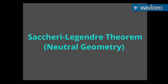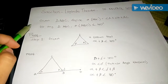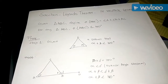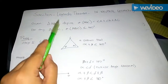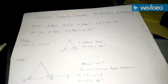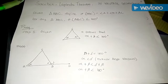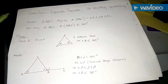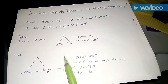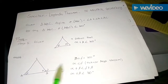Hi everyone, this is Casey from String Mathematics. In this lesson I am going to talk all about neutral geometry, specifically the Saccheri-Legendre theorem. In the Saccheri-Legendre theorem, one thing they were able to prove is that the sum of the angles of a triangle is less than or equal to 180 degrees. In order to prove the sum of the angles of a triangle is exactly 180 degrees, it requires the use of the parallel postulate.